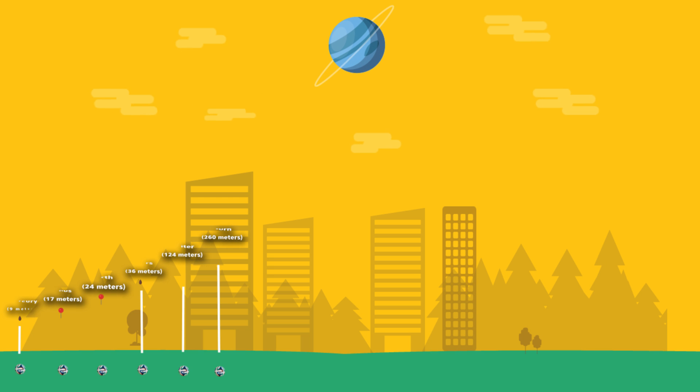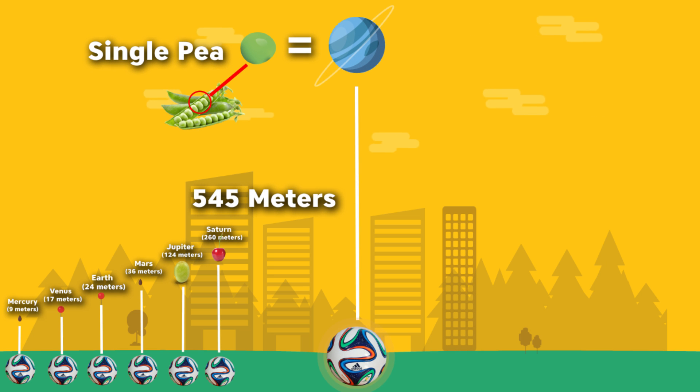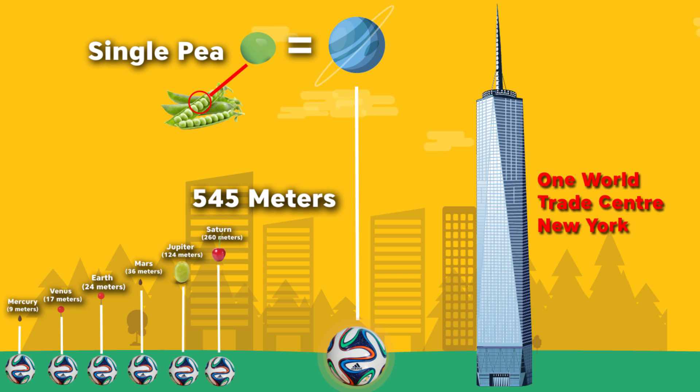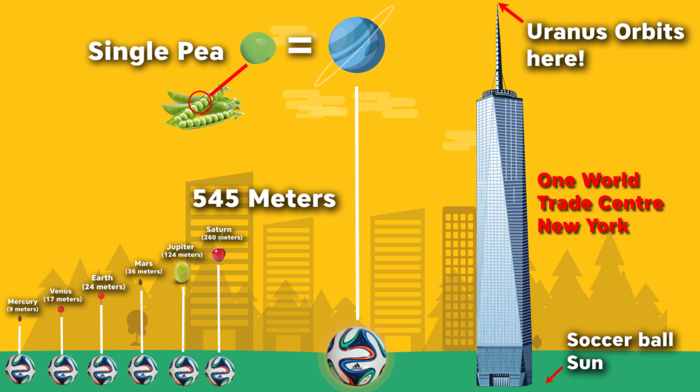And the next planet is Uranus. It's 545 meters away from our soccer ball sun with the size of a pea. This distance is like the ball on the ground near One World Trade Center in New York and Uranus is on the top antenna of the building with the size of a pea. We can't even see the pea from 10 meters with the naked eye, but 545 meters is quite unfathomable how strong our sun is to keep Uranus in orbit.